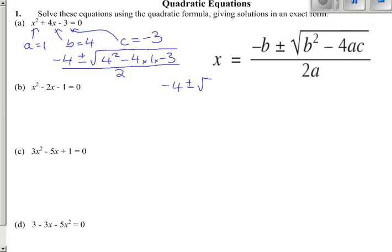So working out this bit underneath the square root, 16 minus minus 12 is 28, so we've got minus 4 plus or minus the square root of 28.